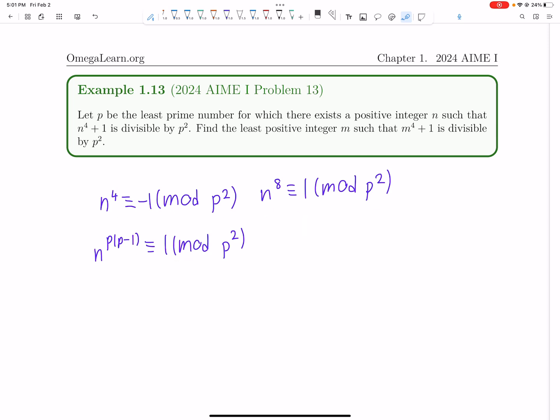So just by orders, and this will make a lot more sense if we learn what orders are, 8 must divide p times p minus 1. And this implies the prime is 1 mod 8.